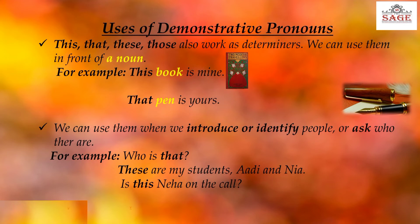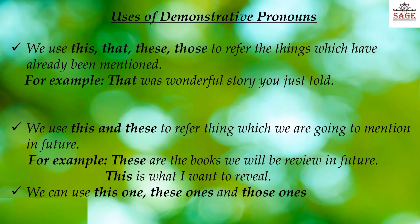Is this Nia on the call? We use this, that, these, those to refer to things which have already been mentioned. For example, that was a wonderful story you just told. We use this and these to refer to things which we are going to mention in future. For example, these are the books we will be reviewing in future. This is what I want to reveal. Or we can use this, these and those with the word ones — this one, these ones and those ones.